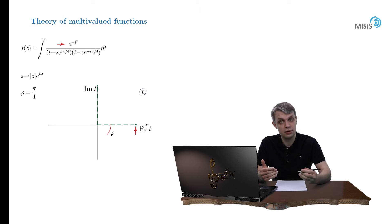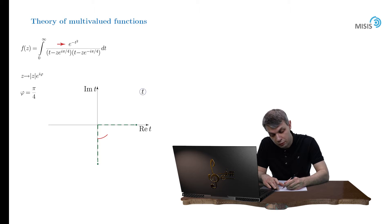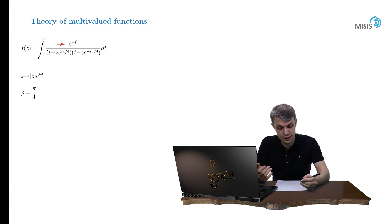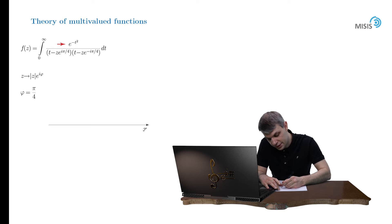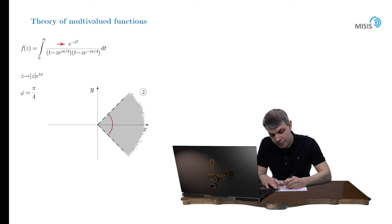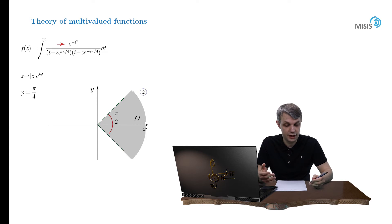The same happens when we rotate in the clockwise direction — both poles move clockwise, and when the argument phi attains minus pi/4, the upper pole hits the real axis and the integral stops existing. So this integral defines a function of z analytic in the following domain in the complex plane of z — a corner-type shape with a span of pi/2, inclined by angle pi/4 with respect to the real axis. Let's call this region Omega.